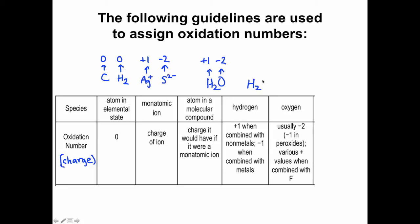Here's an example of the exception. H₂O₂ is a peroxide — hydrogen peroxide. If we used plus one for hydrogen and minus two for oxygen, that wouldn't add up to zero. So in this case, hydrogen has an oxidation number of plus one and oxygen has an oxidation number of minus one. This isn't common — you won't encounter many peroxides — but if you do, that's the exception to minus two for oxygen.